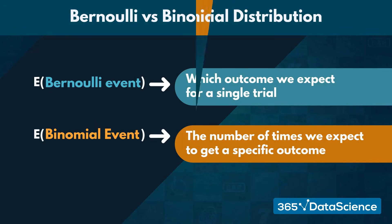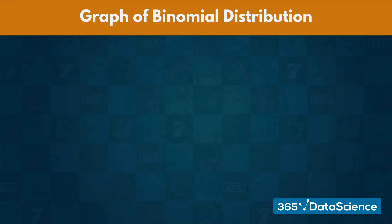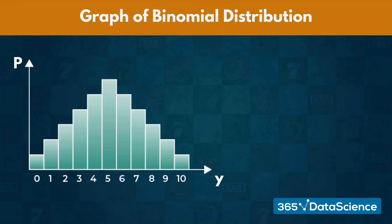The graph of the binomial distribution represents the likelihood of attaining our desired outcome a specific number of times. If we run N trials, our graph would consist of N plus 1 many bars, one for each unique value from 0 to N.